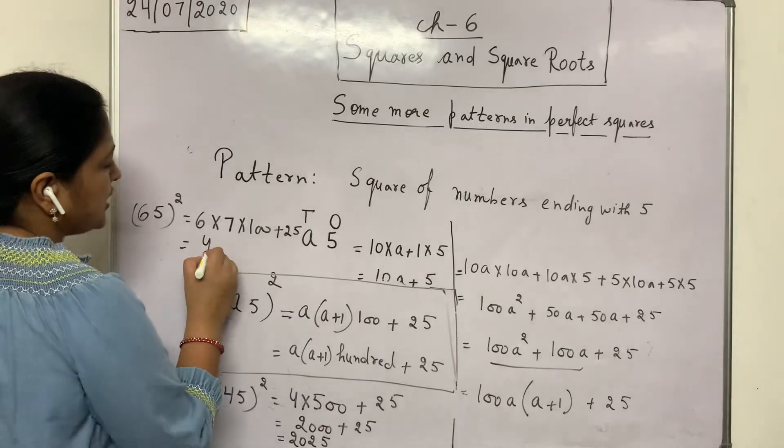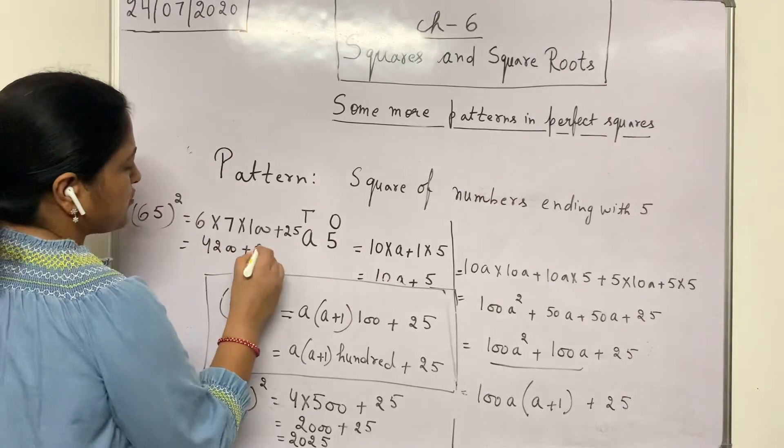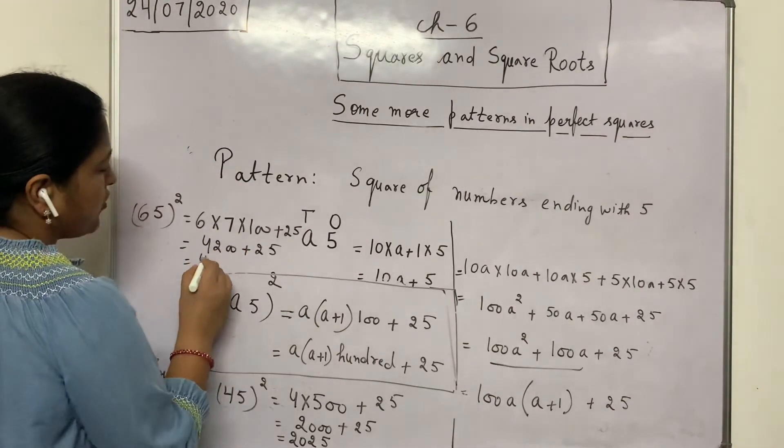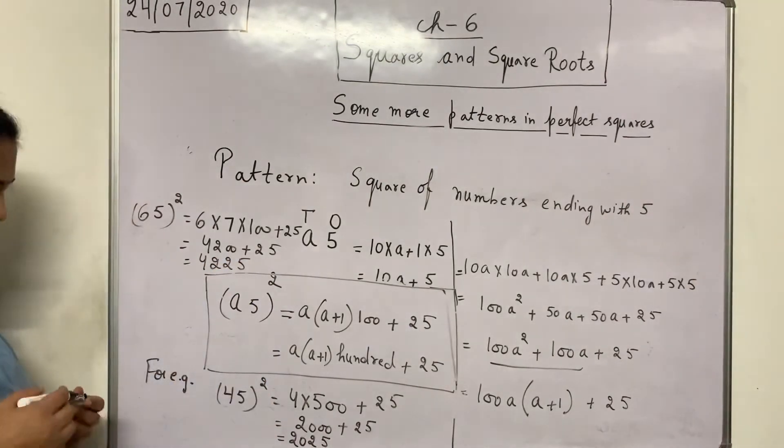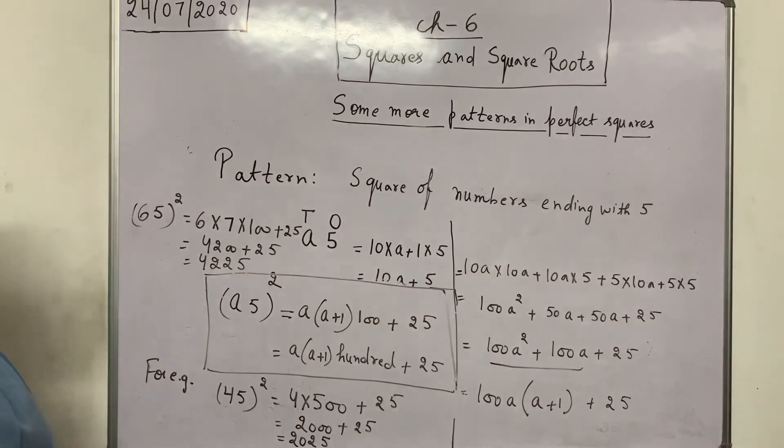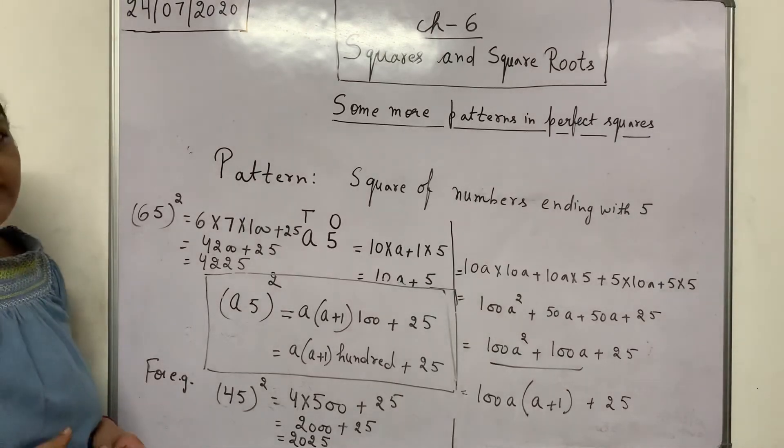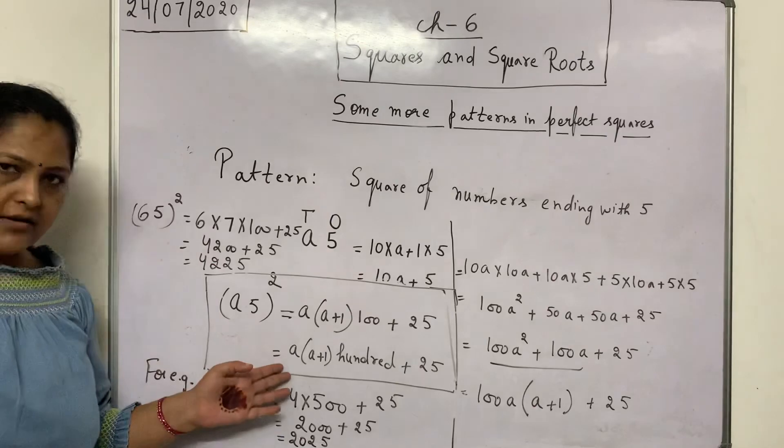Then it will be 4200 plus 25, means 4,225. So we have calculated the square of a number ending with 5 very quickly. That is the use of this pattern.